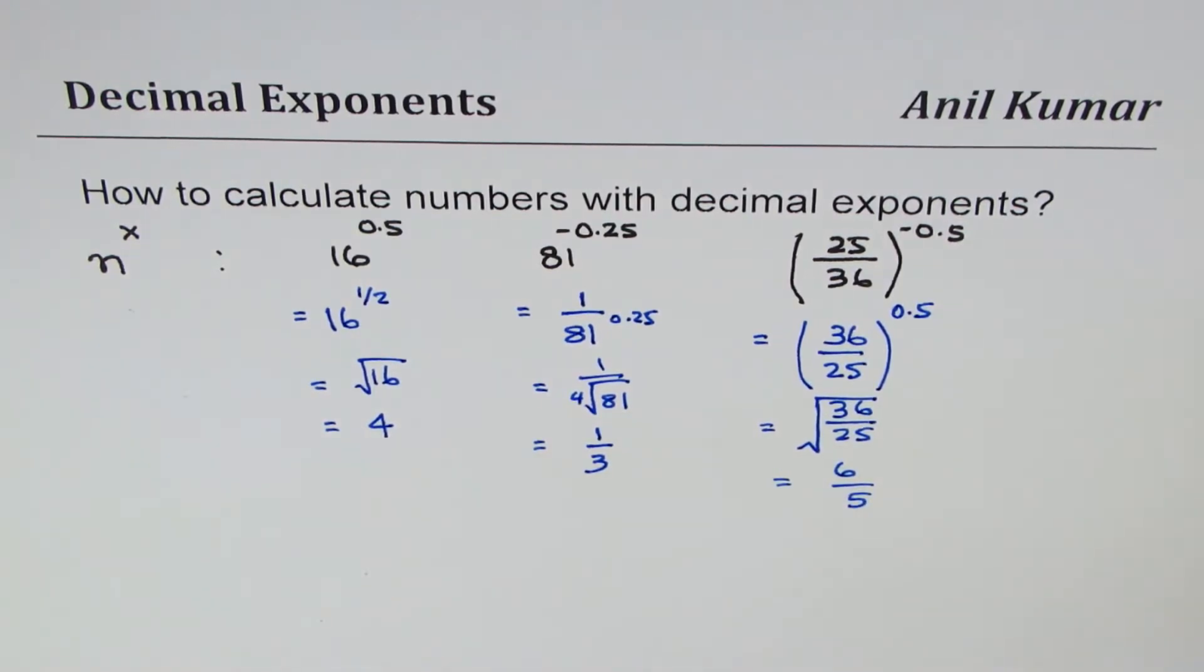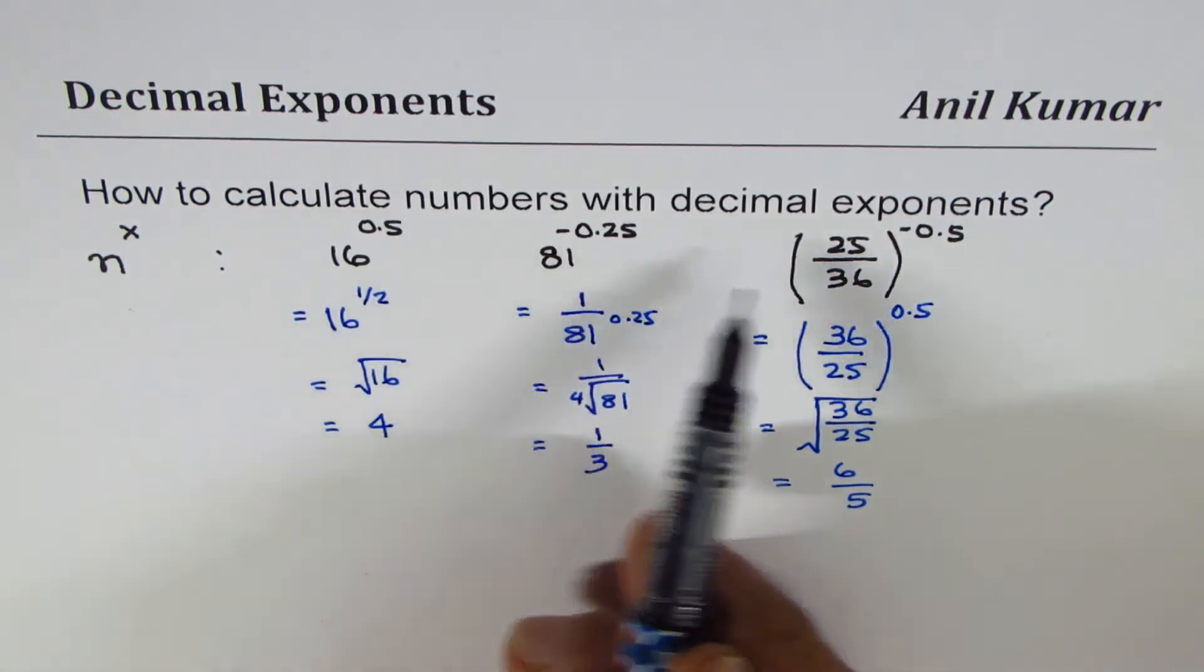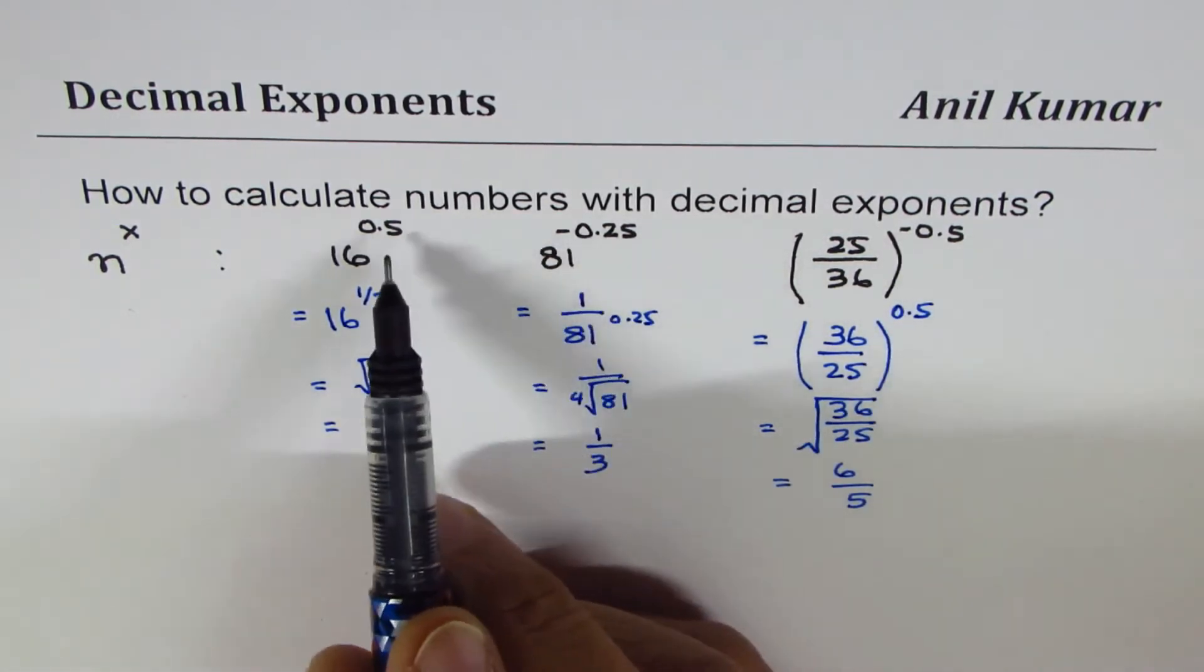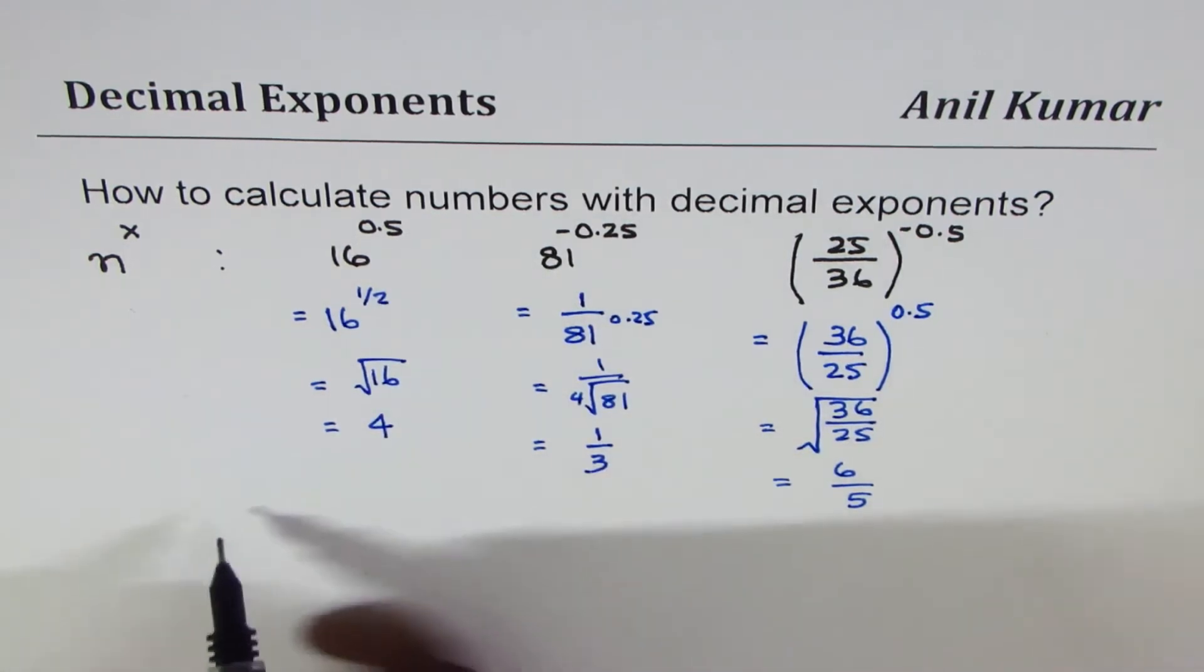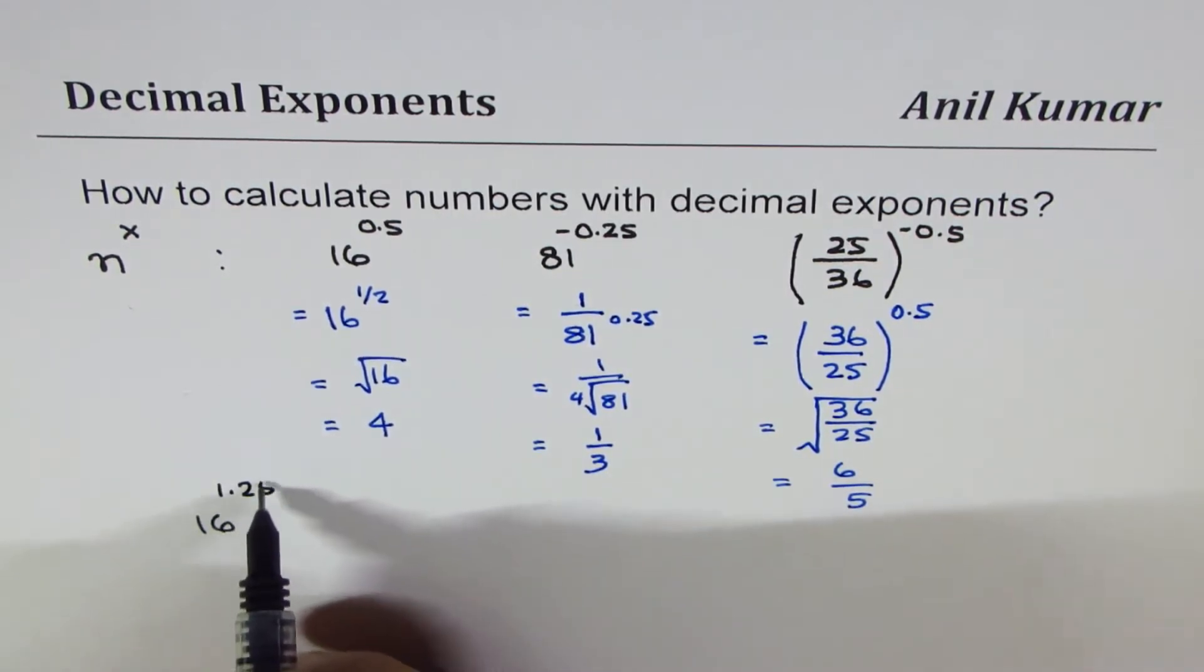I hope these steps are absolutely clear. That is how you could calculate numbers with decimal exponents. Now let me take a few more examples with decimals which are greater than 1, like 16 to the power of 1.25.